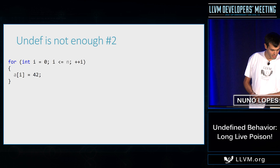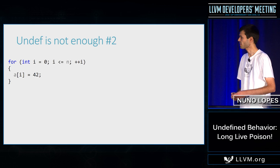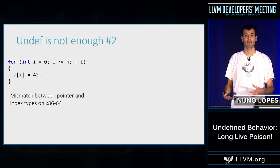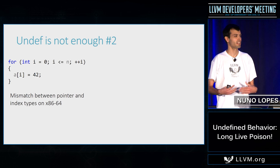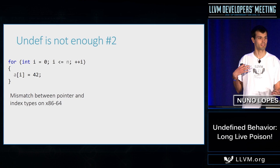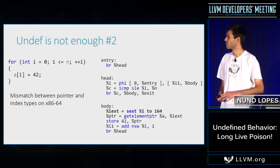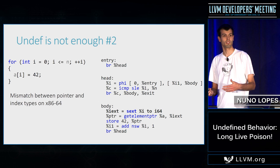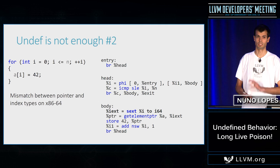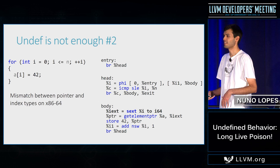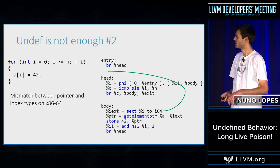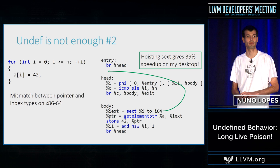A second example of why undef is not sufficient. Consider this simple loop compiled for a 64-bit architecture where int is 32 bits and the pointer is 64 bits. We get a sign extension in the loop body because we have to convert int to long to index the array. Sign extension is usually not free on many architectures — on my desktop machine, getting rid of this sign extension gives a 39% speedup. We badly want to do this optimization: transform i and n into longs.